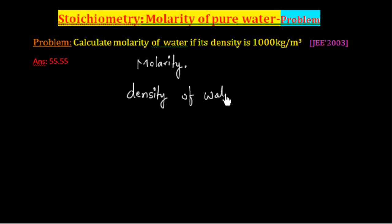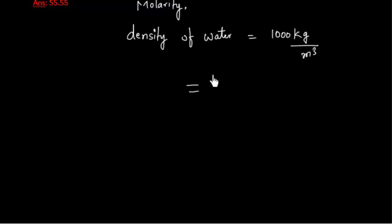And this is equal to 1000 kg per meter cube. Now let us convert this into grams per liter. So 1000 kg is 1000 times 10 to the power 3 grams, and this meter cube is basically 10 to the power 3. 1 meter cube is 10 to the power 3 liters.